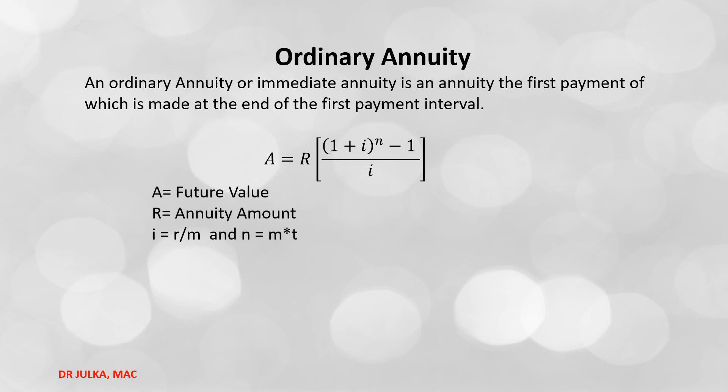If interest is compounded continuously, then the formula for future value of annuity is: FV = integration of R multiplied by e raised to power rt with respect to dt, where the limit is 0 to n.